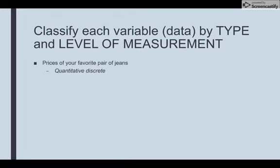If it's quantitative, it's either going to be interval or ratio – again, thinking about what zero means. If I say the price is $0, that would mean I would be getting my blue jeans for free.